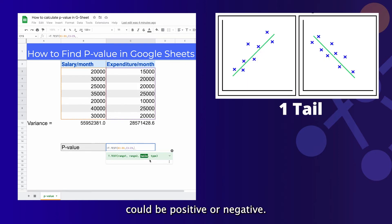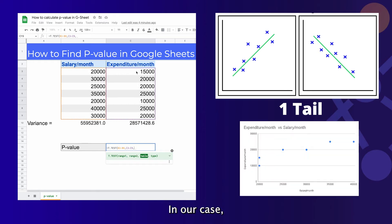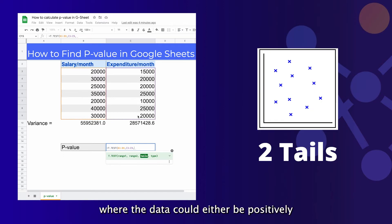In our case, we know that the monthly expenditure is increasing as the monthly salary increases. So if any correlation exists, it will be positive. And in cases where the data could either be positively or negatively correlated, we use a two-tailed hypothesis.